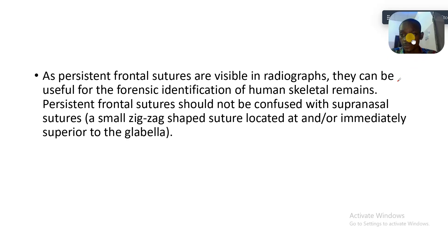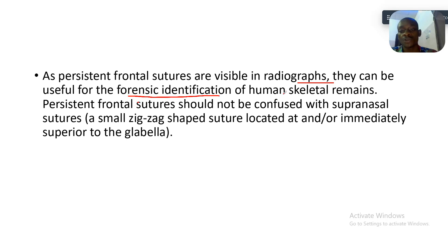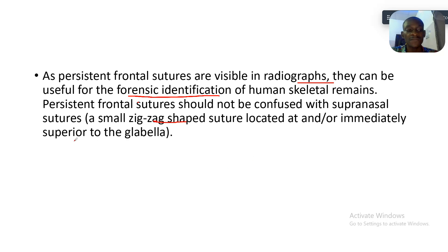A persistent frontal suture is visible in radiographs and can be useful for forensic identification of human remains. Persistent frontal sutures should not be confused with supra-nasal sutures. A supra-nasal suture is a small zigzag-shaped suture located at or immediately superior to the glabella.